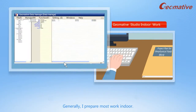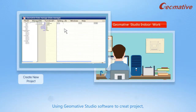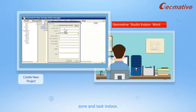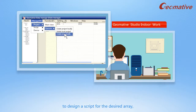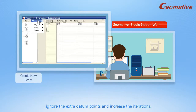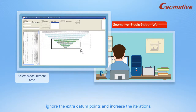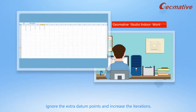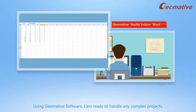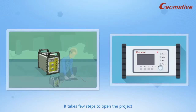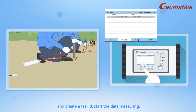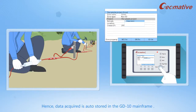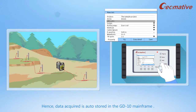Generally, I prepare most of the work indoors. Using Geomative Studio software to create project, zone, and task indoors, or to design a script for the desired array, ignore the extra data and points, and increase interactions. Using Geomative Studio software, I'm ready to handle any complex projects. Are you ready? It takes a few steps to open the project, create a task, and start the data measuring. Data acquired is auto-stored in the GD-10 mainframe.